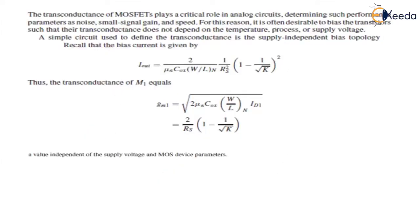The transconductance of MOSFET plays a very critical role in analog circuits, and we have seen that it determines performance parameters like noise, small signal gain, and speed. For this reason, it is often desirable to bias the transistor such that their transconductance — this GM — does not depend upon the temperature, process, or supply voltage.